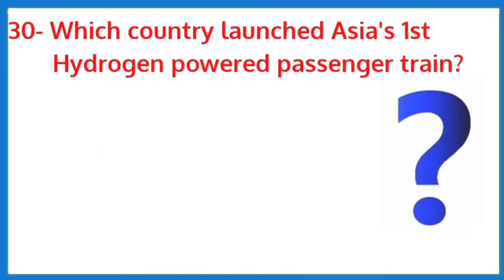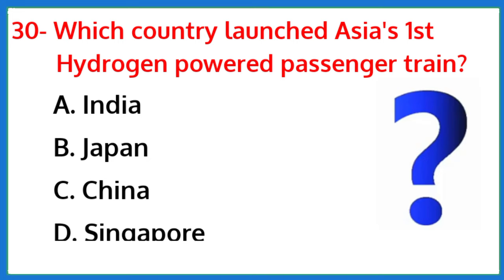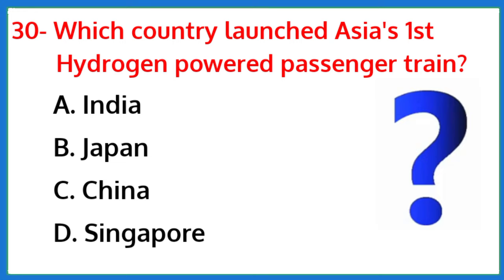Which country launched Asia's first hydrogen-powered passenger train? The correct answer is option A. Please comment this answer in the comment box and subscribe my channel to watch the latest videos.